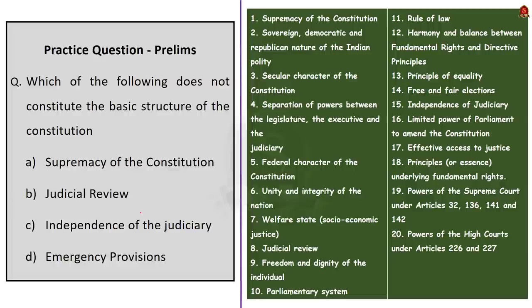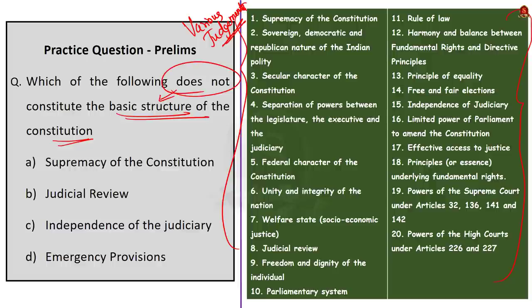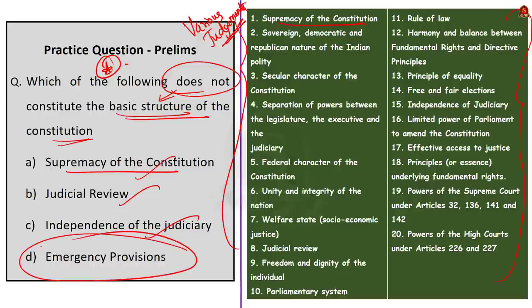The third question is about the basic structure of the constitution — specifically, which of the following does not constitute the basic structure. Option A: supremacy of the constitution — yes, it is present. Option B: judicial review — yes, it is present. Option C: judiciary independence — yes, it is also present. Option D: emergency provisions — no, it is not enumerated in the basic structure of the constitution. The answer is option D: emergency provisions.